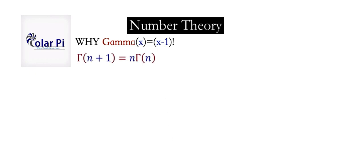In a different video, we proved that gamma of n plus 1 is equal to n times gamma of n. From here, it follows that gamma of n is equal to n minus 1 times gamma of n minus 1.